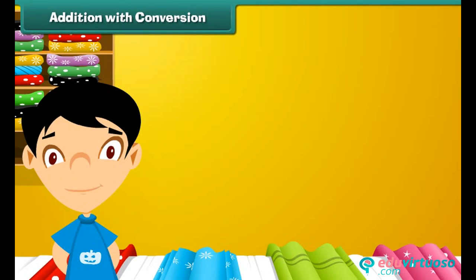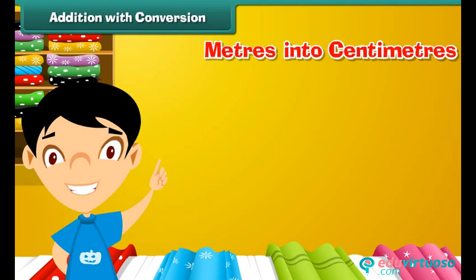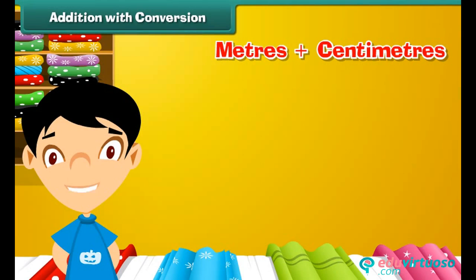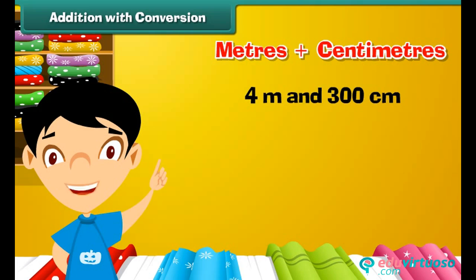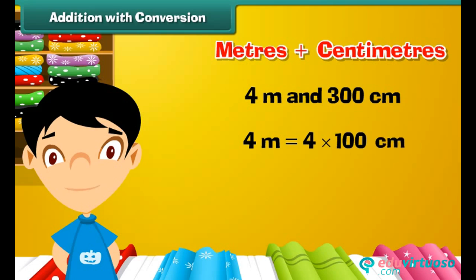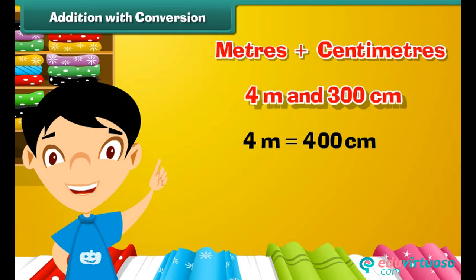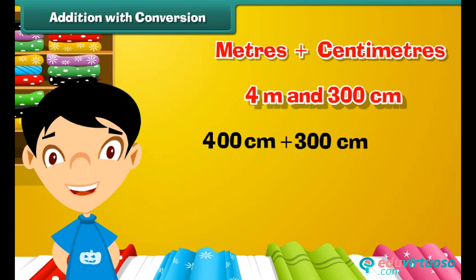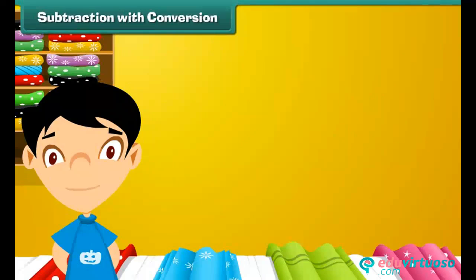Addition with conversion: Now that we know how to convert meters into centimeters, let us learn to add meters and centimeters. Let us add 4 meters and 300 centimeters. First, convert 4 meters into centimeters: 4 into 100 equals 400 centimeters. So 4 meters plus 300 centimeters equals 400 centimeters plus 300 centimeters.